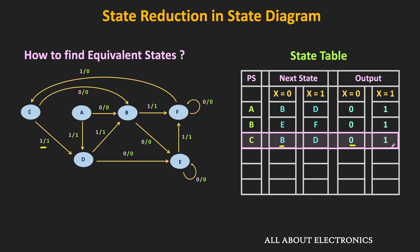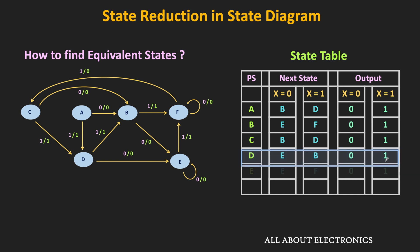Similarly, if the machine is in the D state and the current input is equal to 0, then it will go to the E state, with output equal to 0. In the same state, when the input is equal to 1, then it will go to the B state, with output equal to 1. For the remaining two states, depending on the input, these are the corresponding next states and the output. You can pause the video and verify the table by yourself. Now in the state table, let us check for the equivalent states.